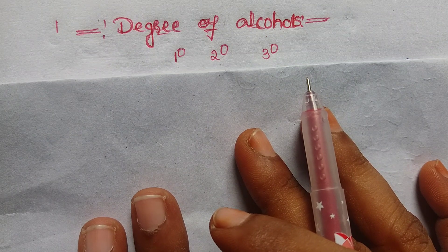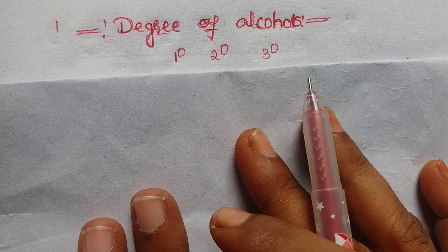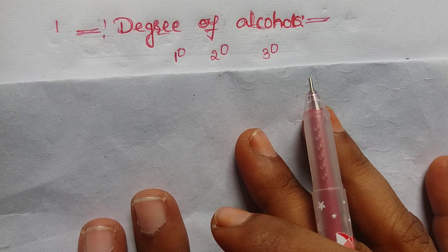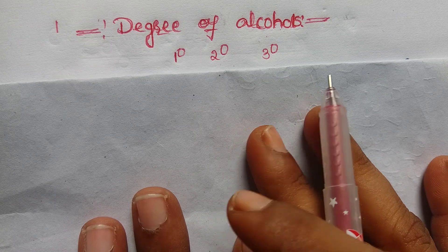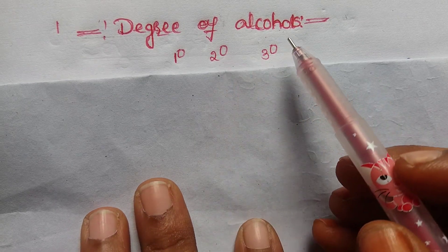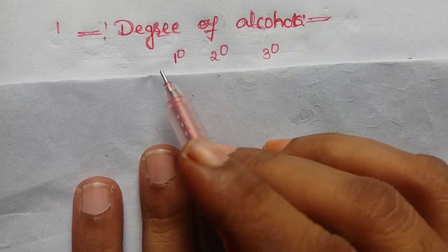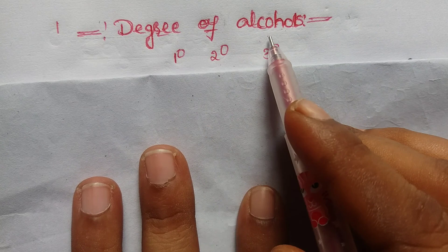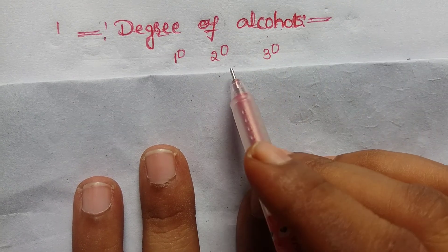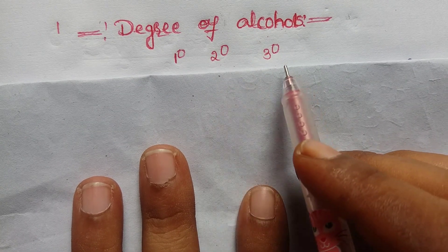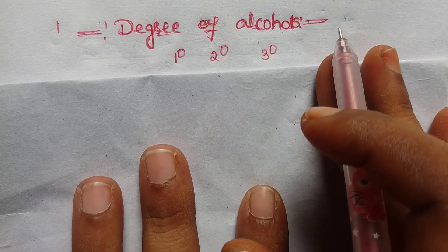Hello students, I am Evakim Madam. Today I will explain the topic: degree of alcohols. Based on the degree, alcohols are classified as primary, secondary, and tertiary alcohols.